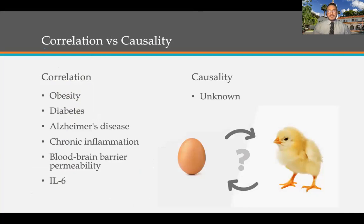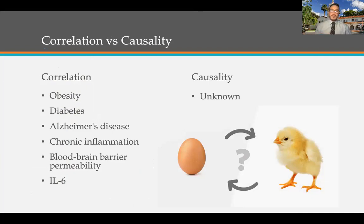Neurodegenerative diseases are irreversible, and there are no current treatments for a leaky blood-brain barrier. What we now see is a correlation between obesity, diabetes, Alzheimer's disease, chronic inflammation, blood-brain barrier permeability, and IL-6. This always leaves us with the chicken and the egg argument — which one comes first? Which one initiates the next? Multiple neurodegenerative diseases, proteins, and signals are correlated with each other, and this is what's being studied.